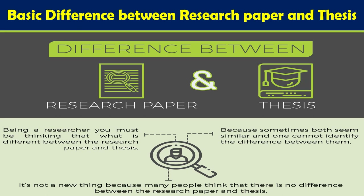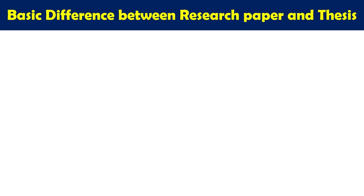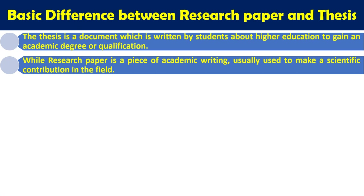PhD, MPhil, and MSc students publish both a thesis and research papers, but these are completely different things. Thesis is a document written by students in higher education to gain an academic degree or qualification, whereas a research paper does not give you a degree — it is a piece of academic writing used to make a scientific contribution to a particular field. A research paper might be one criterion for your degree, but you won't get a degree on the basis of a research paper alone.